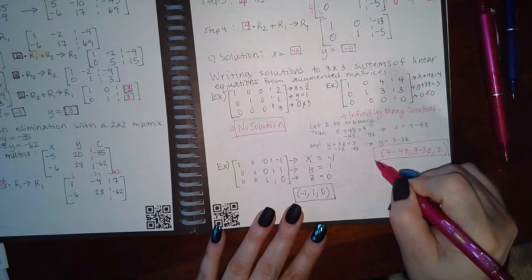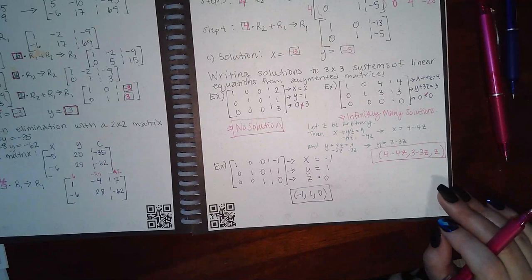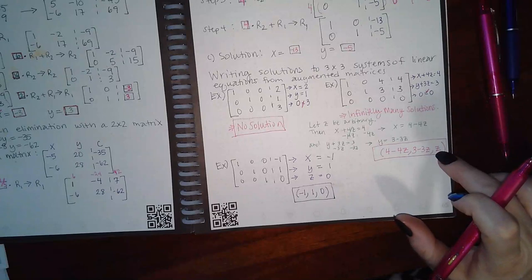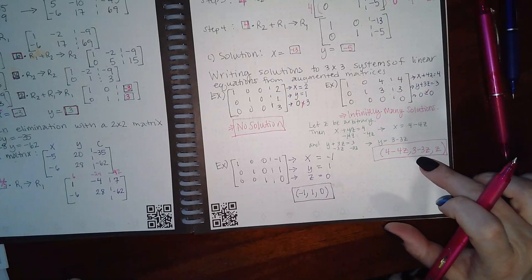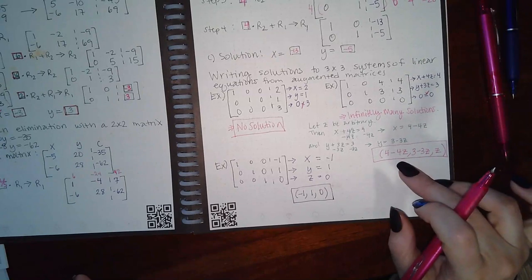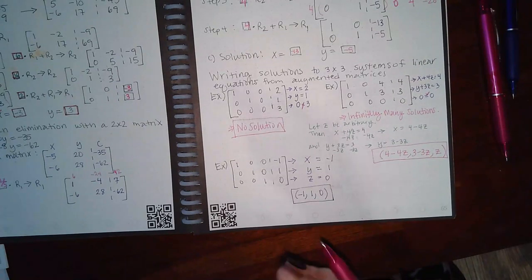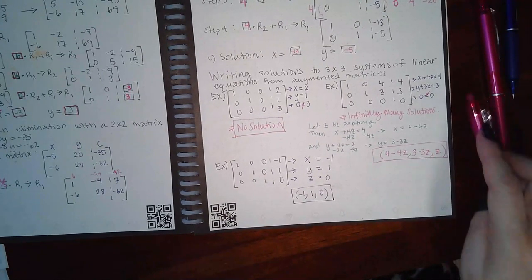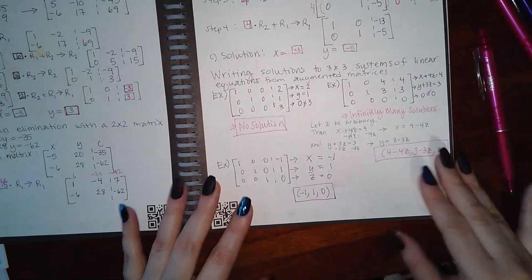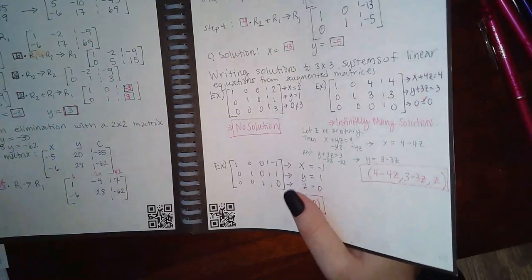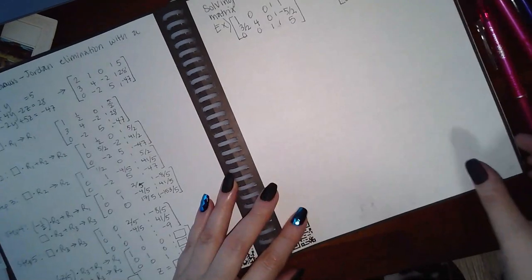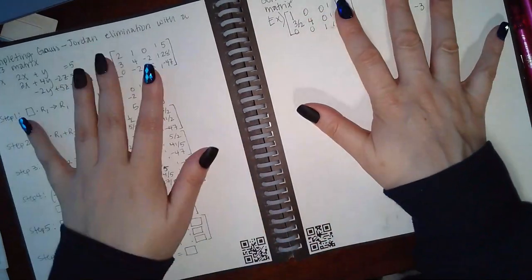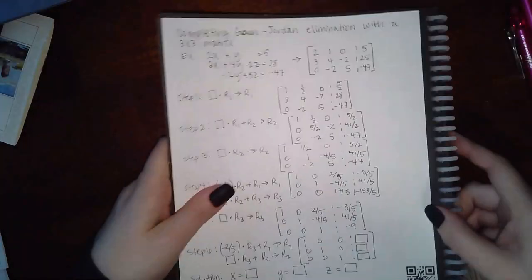How do you write these solutions? For x, write 4 minus 4z; for y, write 3 minus 3z; and for z, just write z because that one is arbitrary. This is what the solutions look like — not just anything can be a solution. The solutions fit a certain format, and this is that format. This is the trickiest one to do in this module.